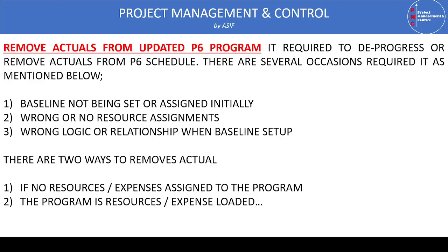When removing actuals or de-progressing a program of works in P6, there are two methods — two cases. The first case is where the program is simple, meaning it is not resource and expense loaded. In this case, it's very easy: we go to activities that are completed or in progress and change their status to 'Not Started'.